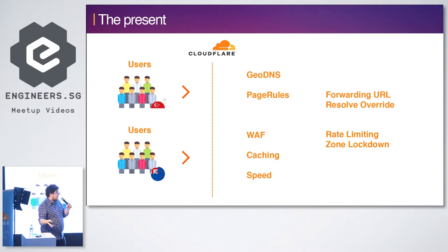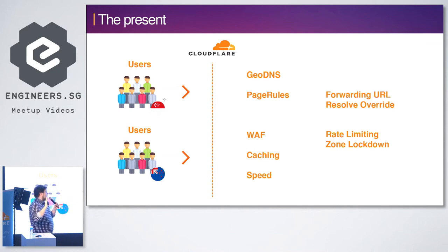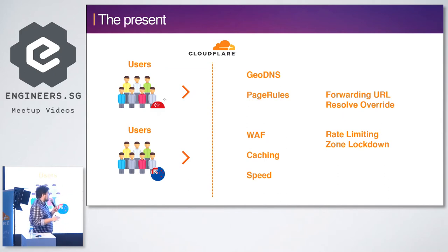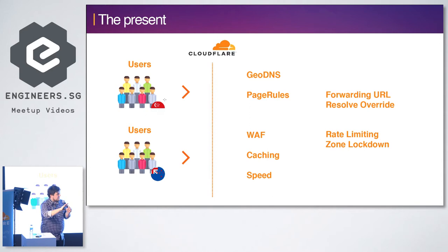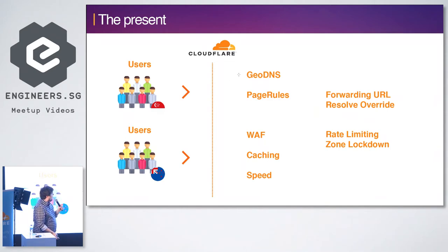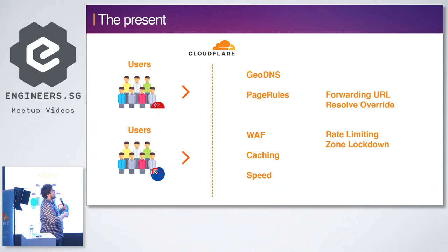Then of course we use the web application firewall and rate limiting — for example, to protect a content management platform login page from bad actors. Zone lockdown allows pages that aren't supposed to be public to be reachable only from certain IP blocks. And then the obvious caching and speed — the CDN portion — delivering answers fast from Cloudflare, improving speed by making your CSS smarter, optimizing JavaScript, and compressing images.